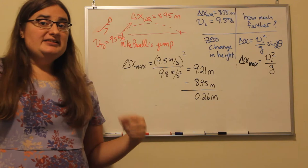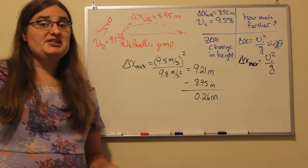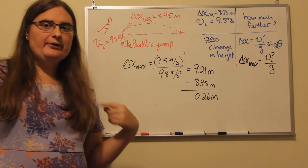It's estimated that his jump speed at takeoff was about 9.5 meters per second. So, how close did Mike Powell come to the theoretical maximum distance if we could ignore the effects of air resistance during that jump?